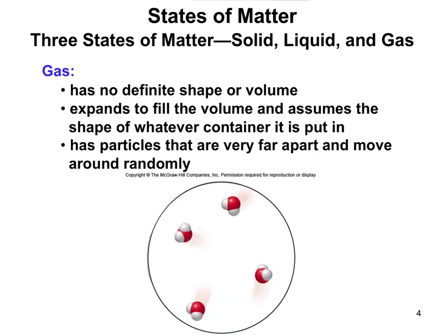The last state of matter is gas. Gases have no definite shape or volume. If you're in a room and you open a door, the gas whooshes out of that room. It's basically going to expand to fill whatever volume it can and assume the shape of whatever container it's put in. It's similar to a liquid in that way, but gas expands as much as it can — these particles are far apart and move around randomly.